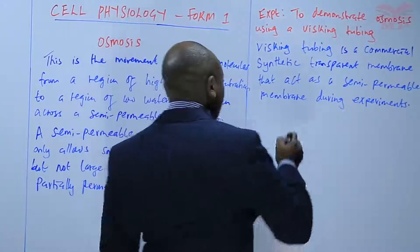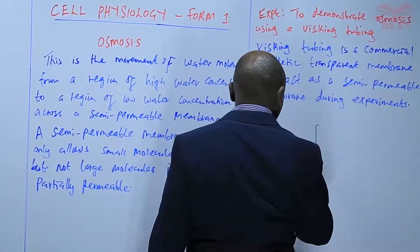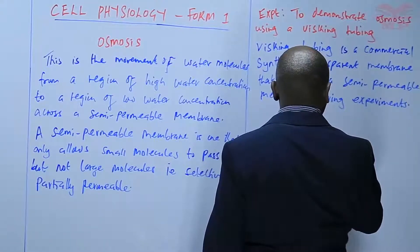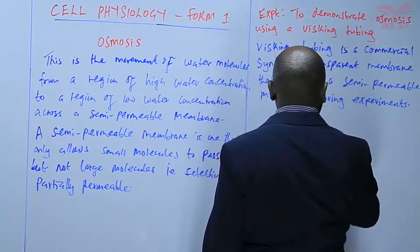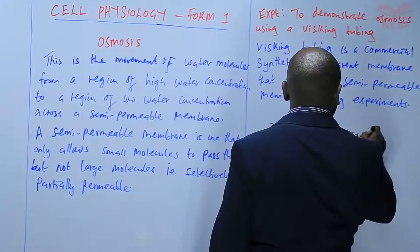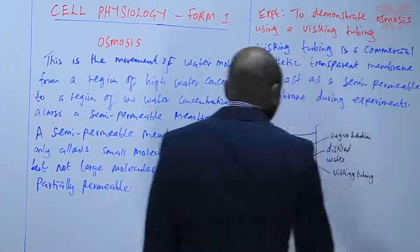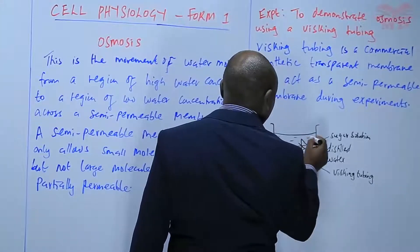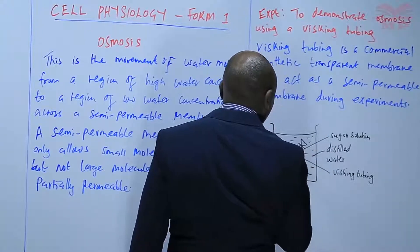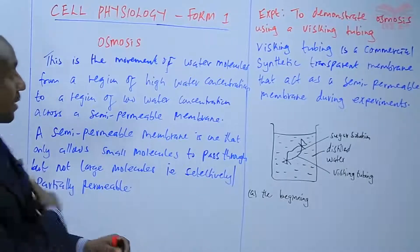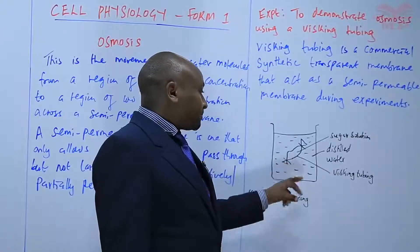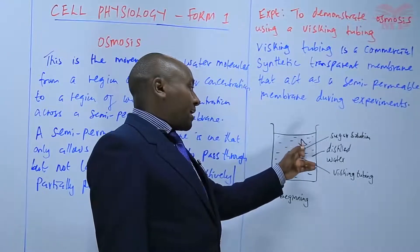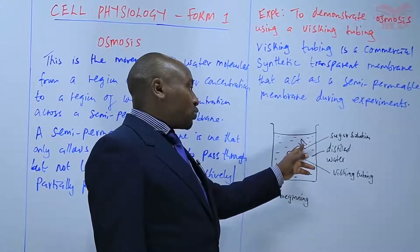So here is the setup at the beginning. We have distilled water in the beaker, and inside the visking tubing we have sugar solution. The visking tubing is tied at both ends. To set up the experiment: get a visking tubing, tie one end, then put some sugar solution up to a certain level, and tie the other end to make sure the sugar solution does not spill out.